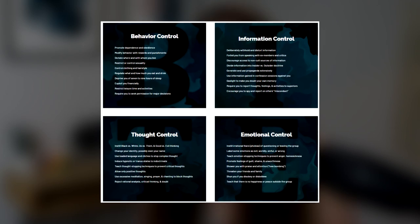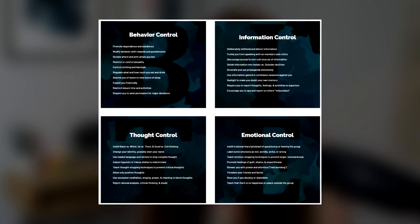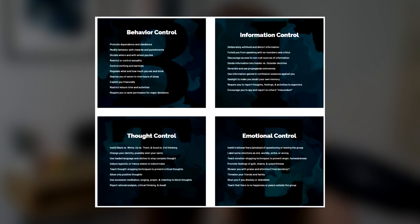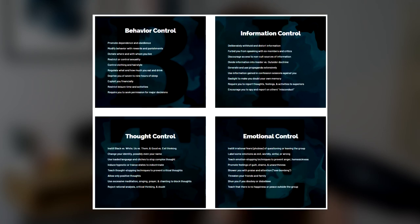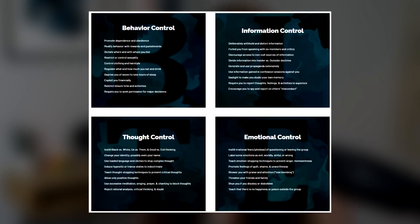The BITE Model describes the four components of cult manipulation: behavior, information, thought, and emotional control. If a group meets some or all of the items listed under the four components, they can be thought of as a destructive cult. The BITE Model has roots in renowned psychologist Robert J. Lifton's writings on thought reform, commonly referred to as brainwashing and totalism. Totalism describes an organization or movement's desire to control every aspect of an individual's life, from their behavior to their thoughts.